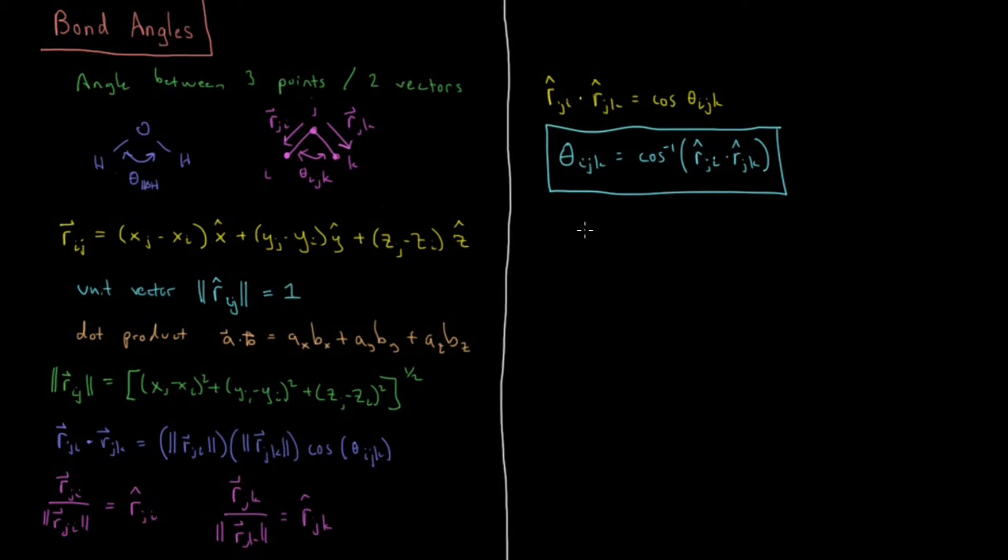So now again, as we noted with bonds, we want to note what's the domain and what are the restrictions that occur in these cases. So we have 0 is less than or equal to theta I,J,K, which is less than or equal to 180 degrees, or from 0 to pi in radians. We also have the caveat that theta I,J,K equals theta K,J,I.